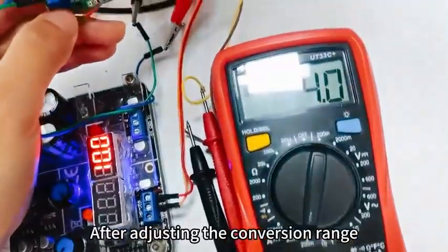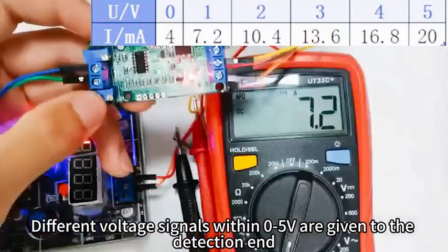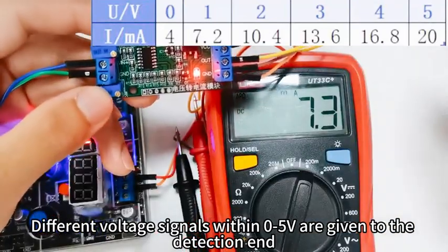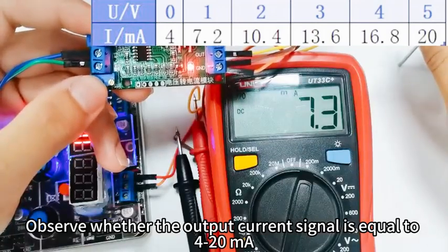After adjusting the conversion range, Step 7: Different voltage signals within 0 to 5 volts are given to the detection end. Observe whether the output current signal is equal to 4 to 20mA.